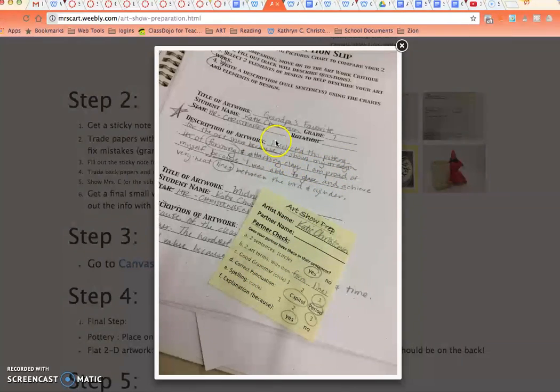Correct punctuation. Do they have capitals, periods in the right place? Yes, there's a capital. Yes, there are periods. So I circled both of those. They are correct. Spelling. If they do not have any mistakes, they get a three. If there's one mistake, they get a two. If they have more than two mistakes, they get a one. And then go back and help them figure that out.